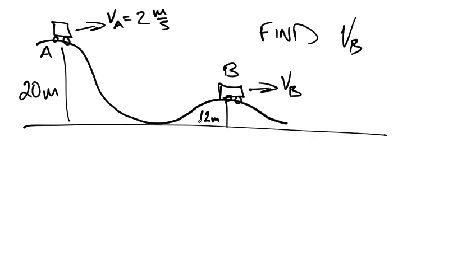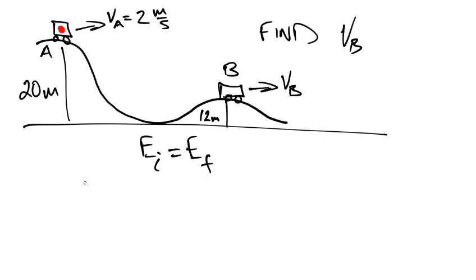What is that velocity? The way we're going to do this is we're going to solve this with the conservation of energy. Initial energy is equal to final energy. So we have to ask ourselves something. How many different types of energy does the roller coaster have at this point? At this point, it's got two types of energy. It's got gravitational potential energy. Why? Because it's 20 meters off the ground, and it's got kinetic energy. Why? Because it's moving.